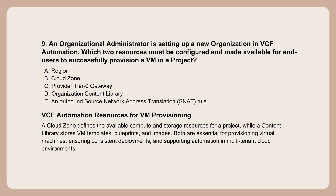Final piece of the provisioning puzzle: the user is in a project, the policy rules are set. What are the last two core resources that must be configured for the end user to actually succeed in provisioning a new VM? The user needs two essential things mapped to their project. First, access to a cloud zone — the cloud zone defines the actual pool of underlying physical or virtual resources (compute, storage, network) they can draw from. Second, they need an organization content library — this holds the blueprints, VM templates, OS images, and approved building blocks they can deploy. The cloud zone provides the physical capacity; the content library provides the pre-approved standardized templates to build their VM from. You need both configured and accessible for that provisioning request to actually work.